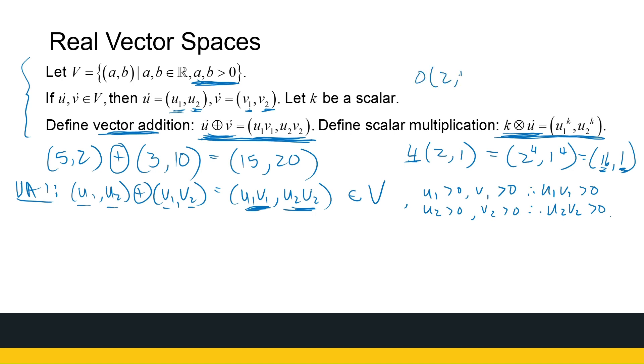What is 0 times (2, 1)? Well, it's 2 to the power of 0, 1 to the power of 0. Well, that's just 1 and 1. So I still have an ordered pair. Both entries positive.